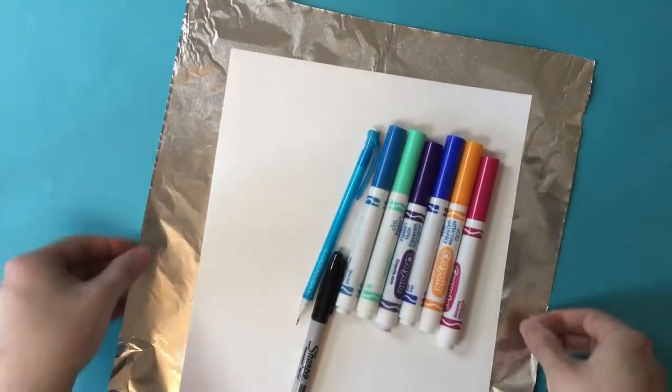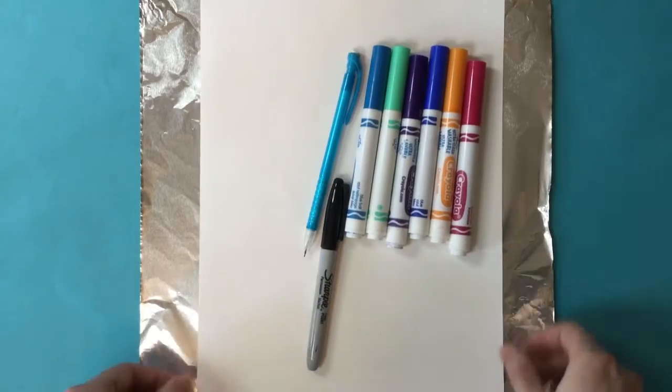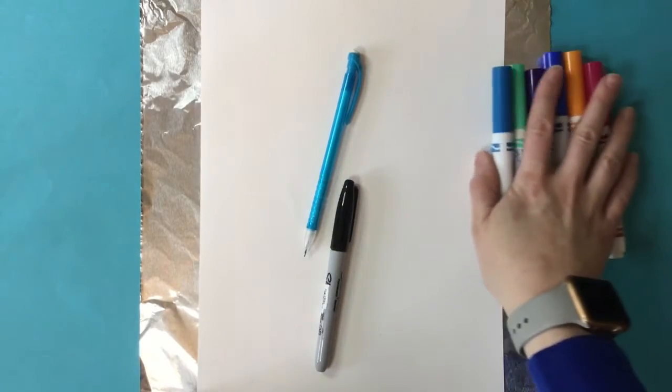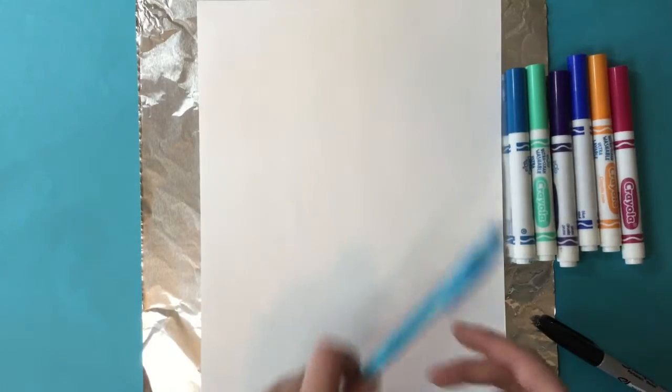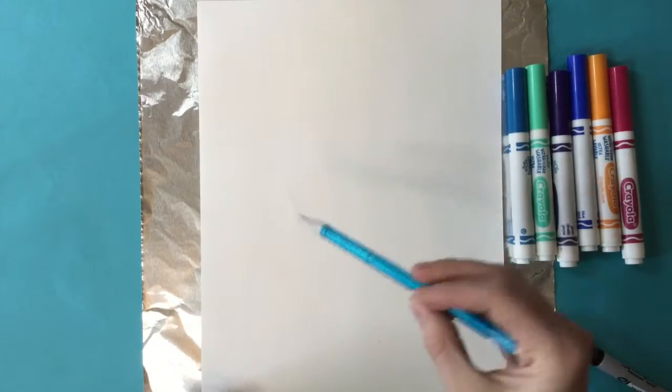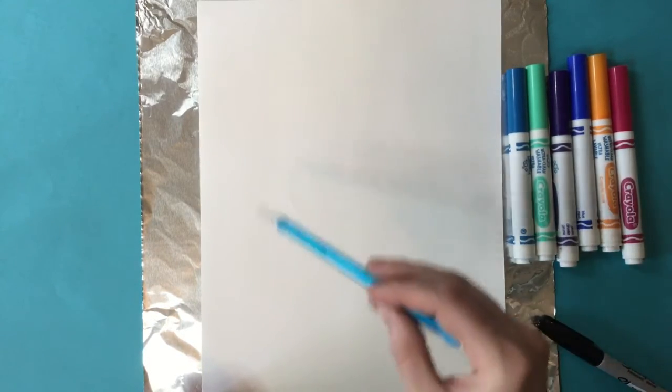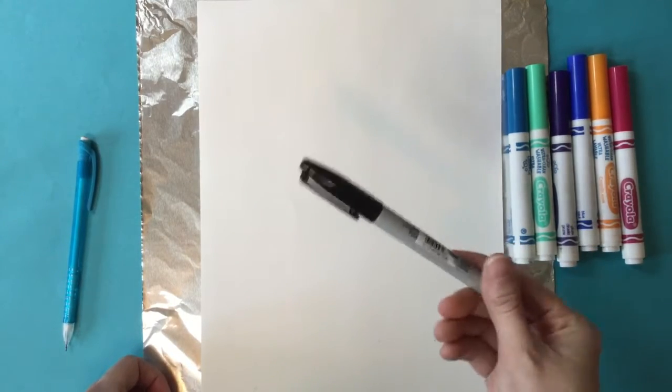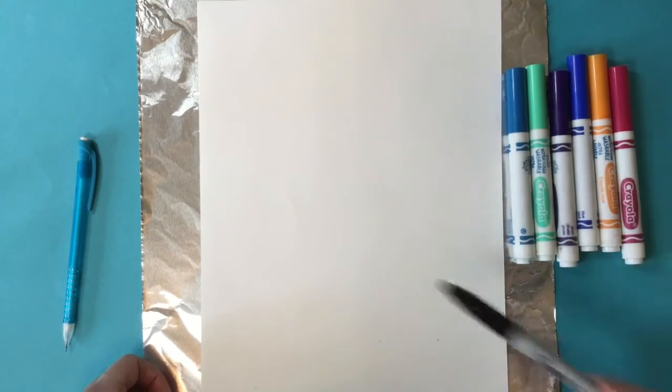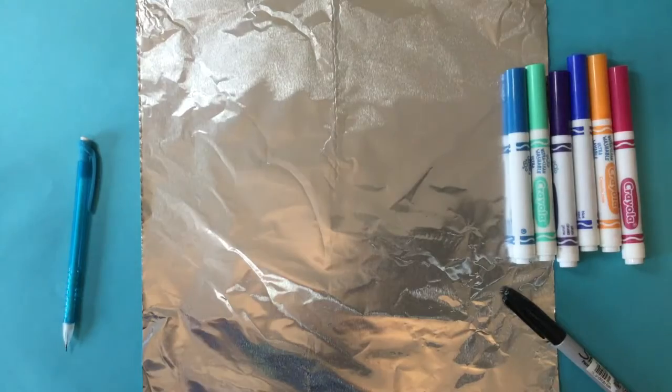We're going to start with our white paper and you can put all of your other supplies off to the side. We're going to start with that pencil and on your paper you can draw anything that you want, any picture. It's totally up to you and then you're going to trace the picture with the sharpie or the black crayon, anything that's not washable.